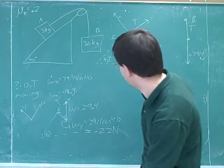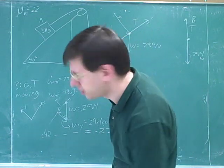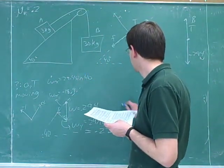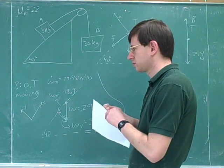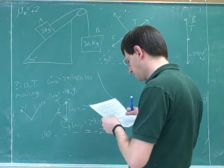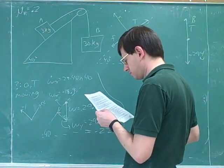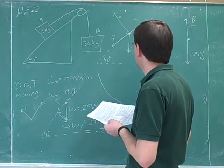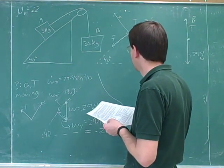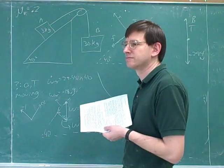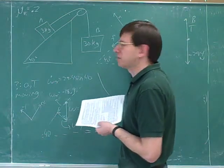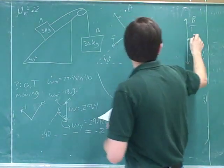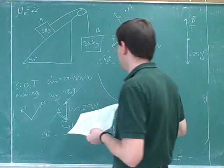Now we will use Newton's second law. How many equations is that going to give us? Three — we get an x and a y component equation for object A, and only a y component equation for object B.